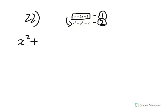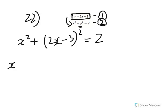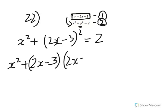So you get x squared plus — replace the y, because y equals 2x minus 3 — x squared plus (2x minus 3) whole squared equals 2.